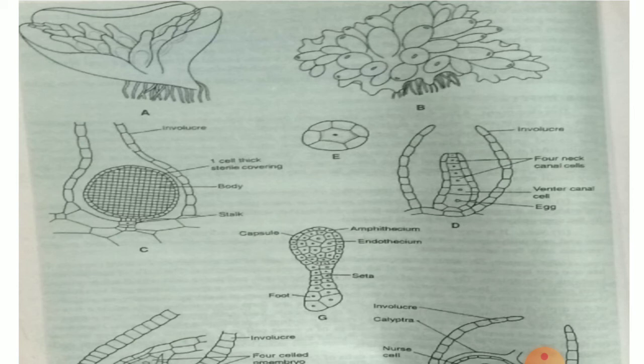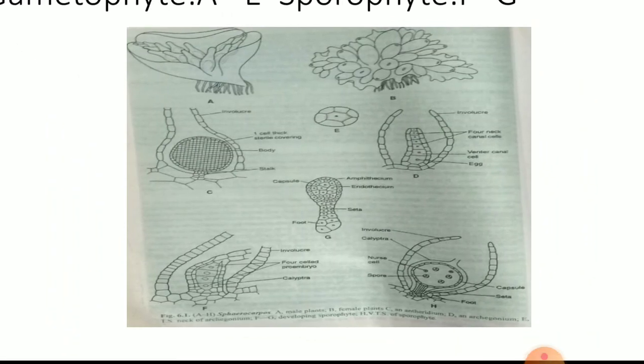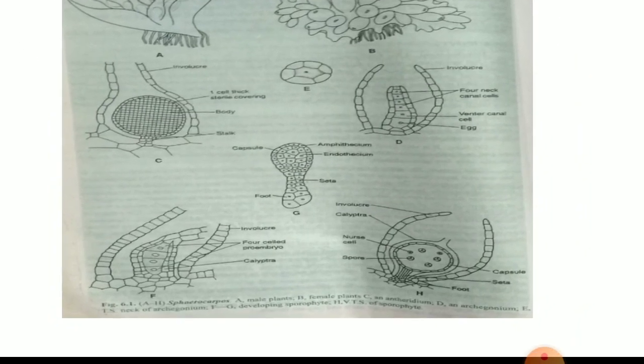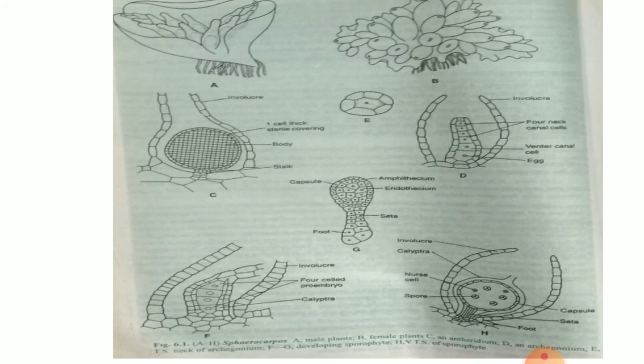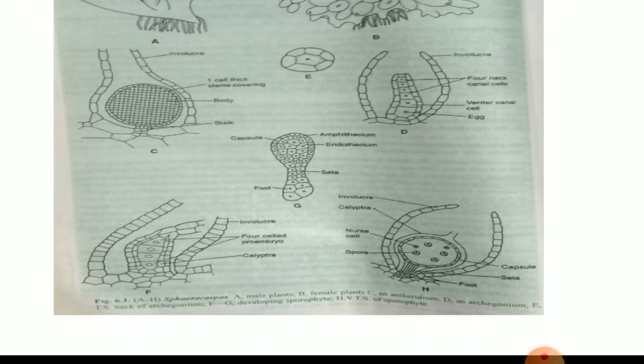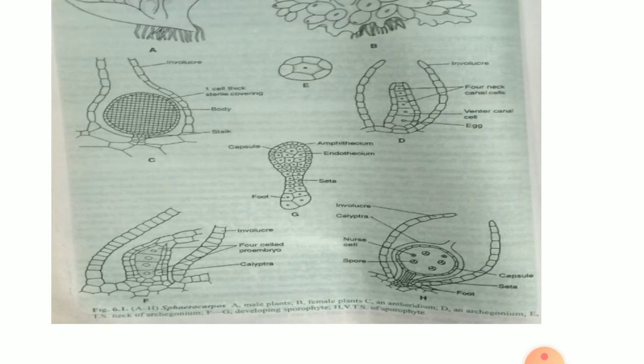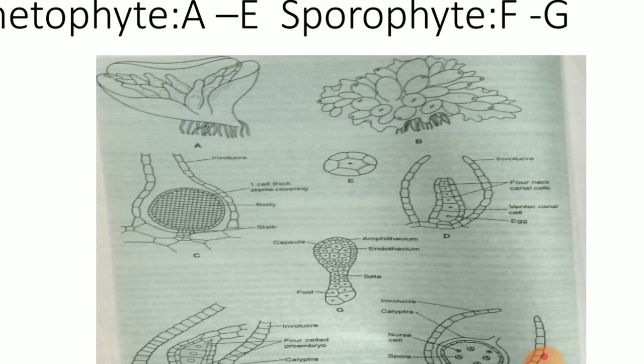The male plants are relatively smaller in size. Figure A is the male plant and B is the female plant. So the male plant is smaller in size compared to the female plant. The dorsal surface of the thallus has several flask-shaped sessile involucres which open outside by a mouth.